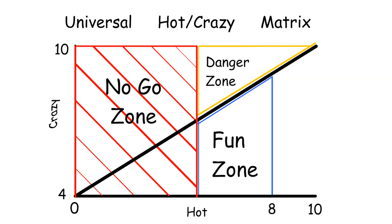This zone here is below the crazy line, above an 8 hot, but still about a 7 crazy. This is your date zone. Above an 8 hot and between about a 7 and a 5 crazy, this is your wife zone.